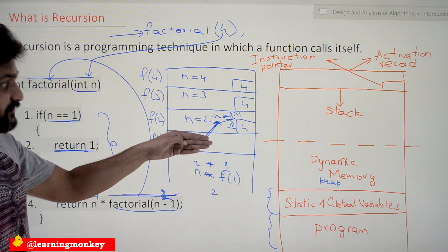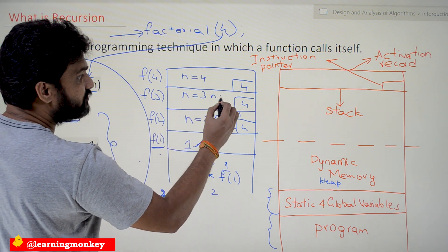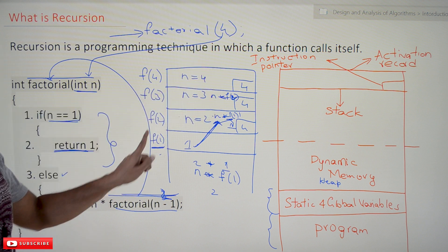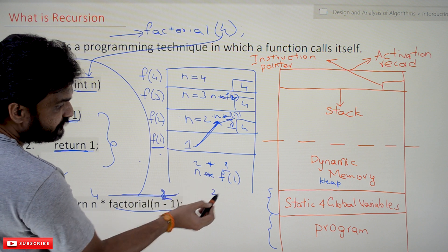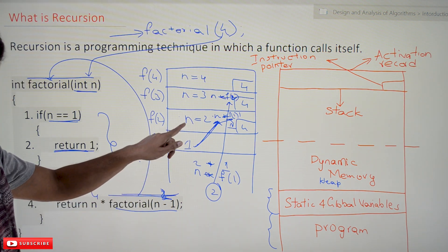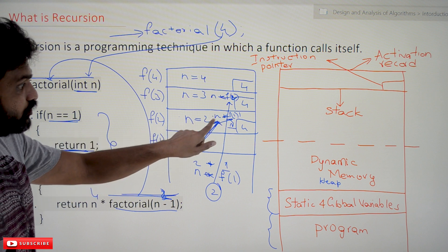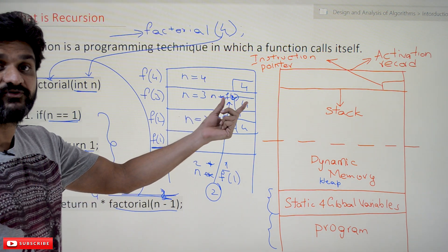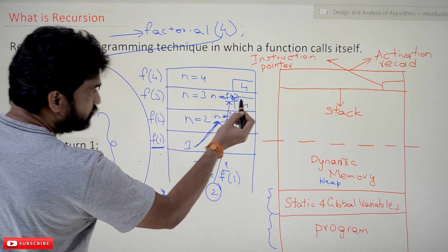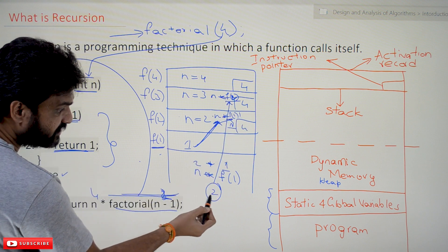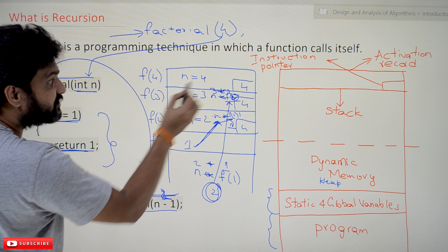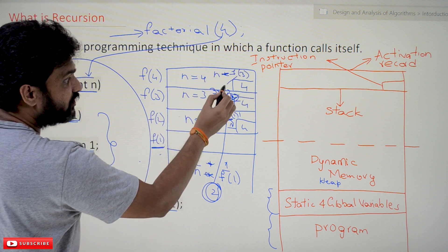This activation record for f(3) was created at n into f(2). f(2) returns 2. The value of n in f(3) is 3, so 3 into 2 equals 6 — f(3) returns 6. The activation record for f(4) was halted at n into f(3). f(3) returns 6, and the value of n in f(4) is 4, so 4 into 6 equals 24.